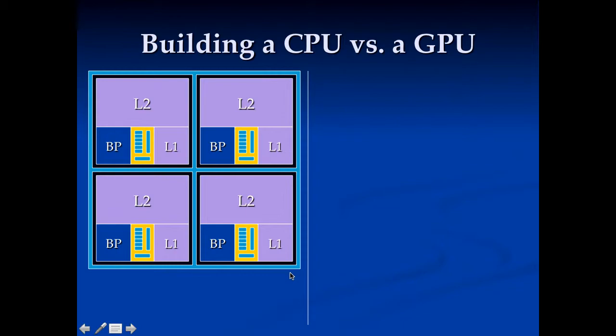Now let's take a look at how you build a GPU, because it's somewhat different. Here's our GPU pipeline. It's a simple pipeline, and we want to get good performance. We're not going to try and make this pipeline really fancy because a GPU is focused on throughput. So instead, we're just going to start copying the pipeline. We're going to put a whole bunch of these together. Here we've got eight pipelines, so we can do eight things at once, so we can get eight times the throughput.